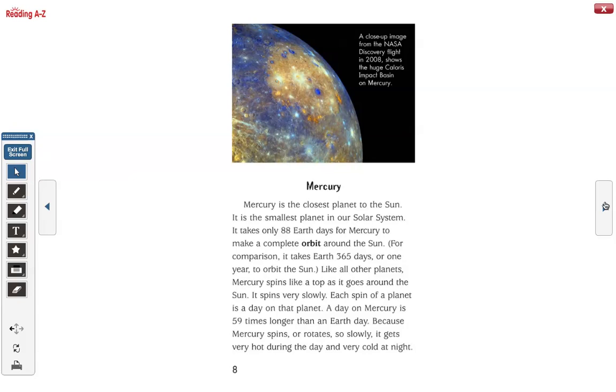Like all other planets, Mercury spins like a top as it goes around the Sun. It spins very slowly. Each spin of a planet is a day on that planet. A day on Mercury is 59 times longer than an Earth day. Because Mercury spins or rotates so slowly, it gets very hot during the day and very cold at night.